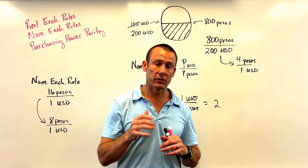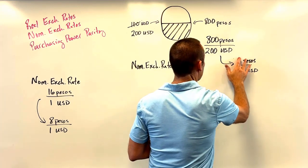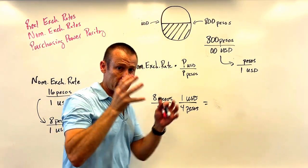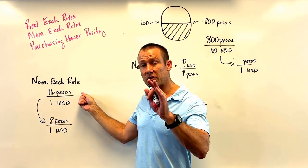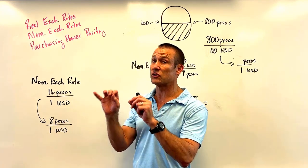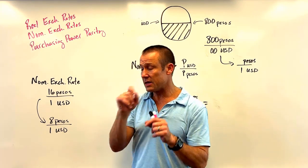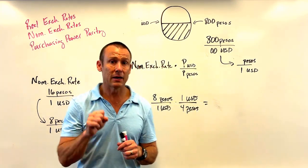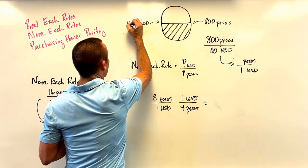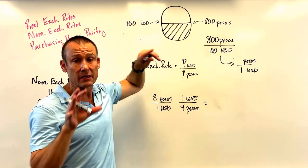Now let's see an example where the real exchange rate does change and net exports do change. Let's go back in time. Again, the USD depreciates in nominal terms — from 16 pesos to 8 pesos per USD. But this time, nothing happens to price levels in either country. Price levels stayed the same.